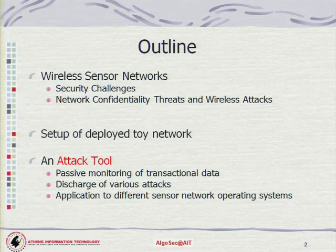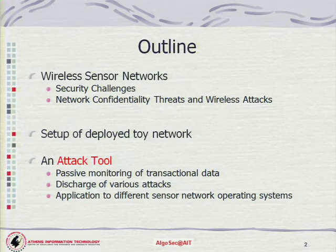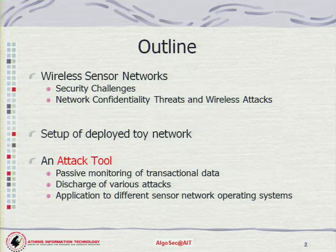Today's topic will be about discussing and describing an attack tool that is capable of compromising the security profile of a wireless sensor network. Its basic functionalities include passive monitoring of transactional data — essentially a sniffer — and most importantly, the ability to launch various kinds of attacks against these networks. One more important characteristic is that it can be applied to different sensor hardware platforms, so it's really portable.